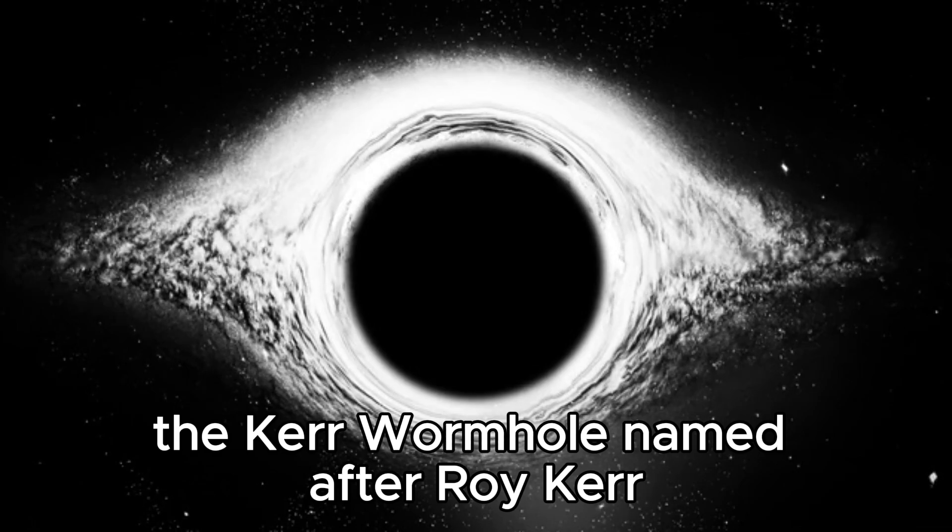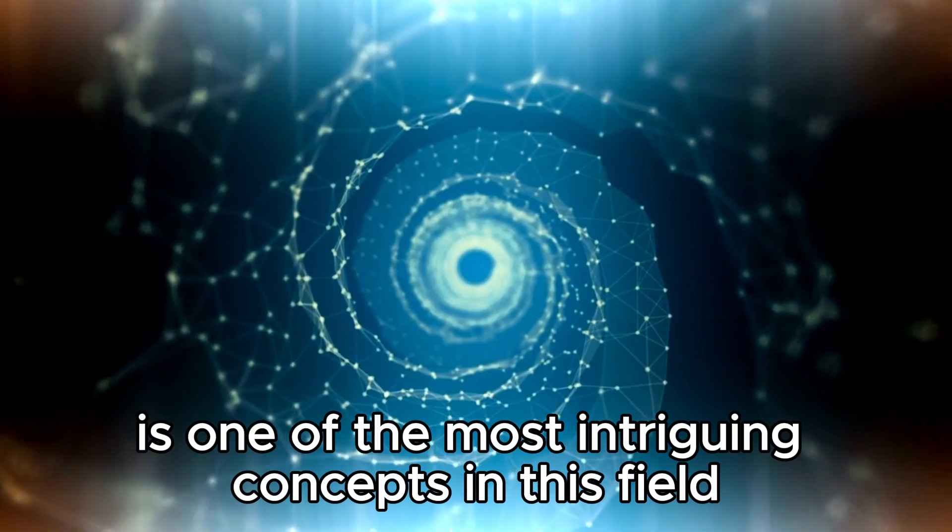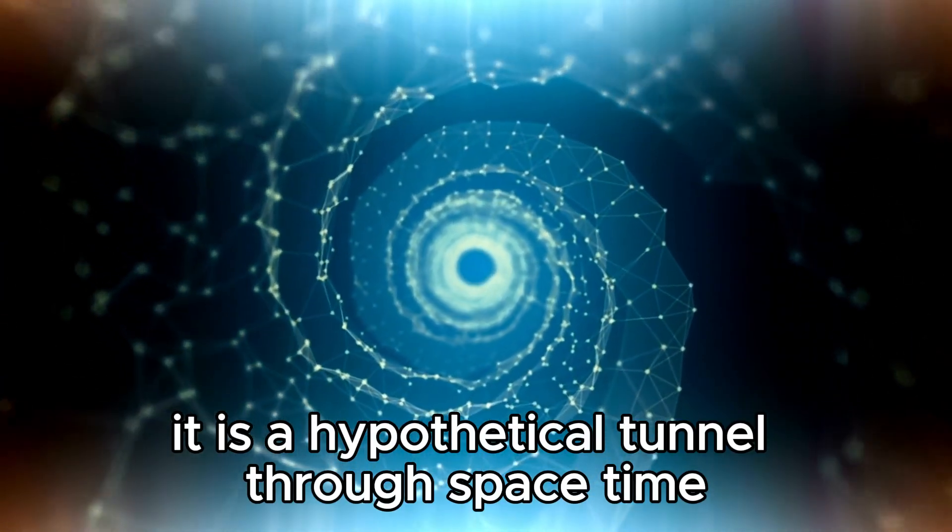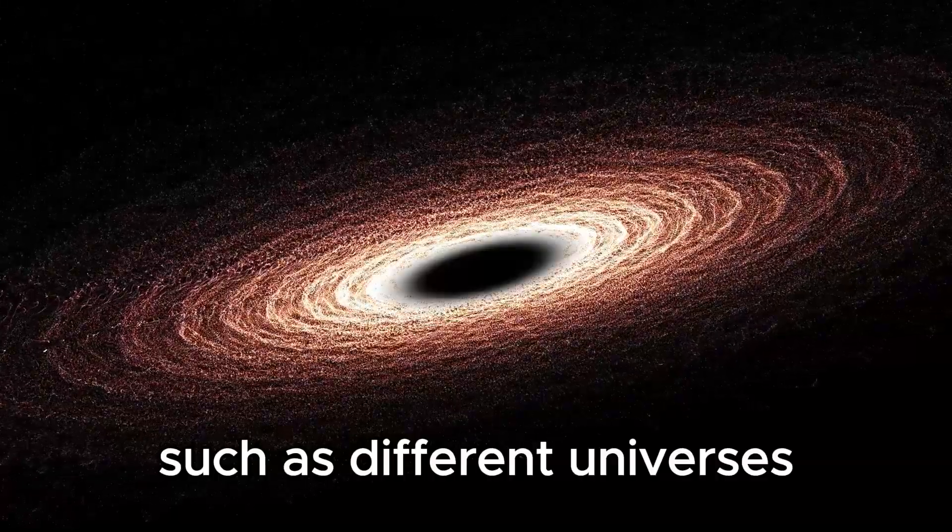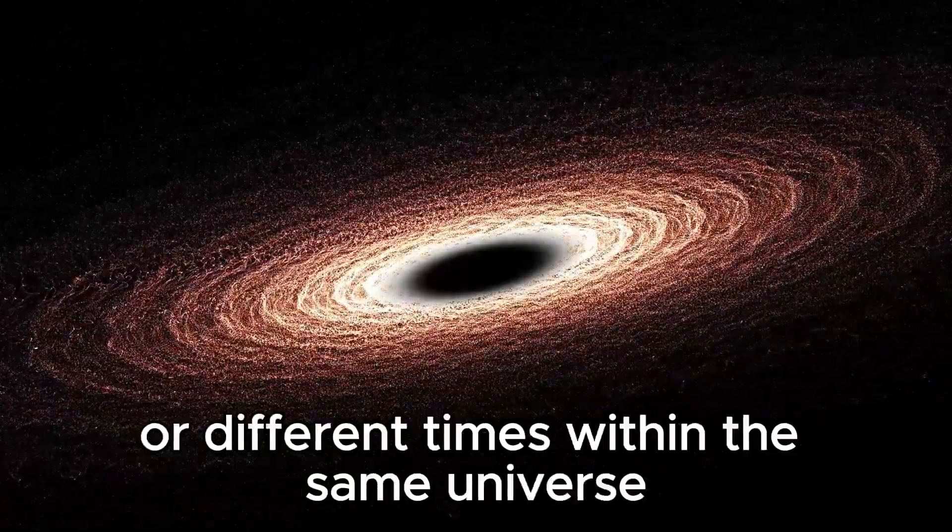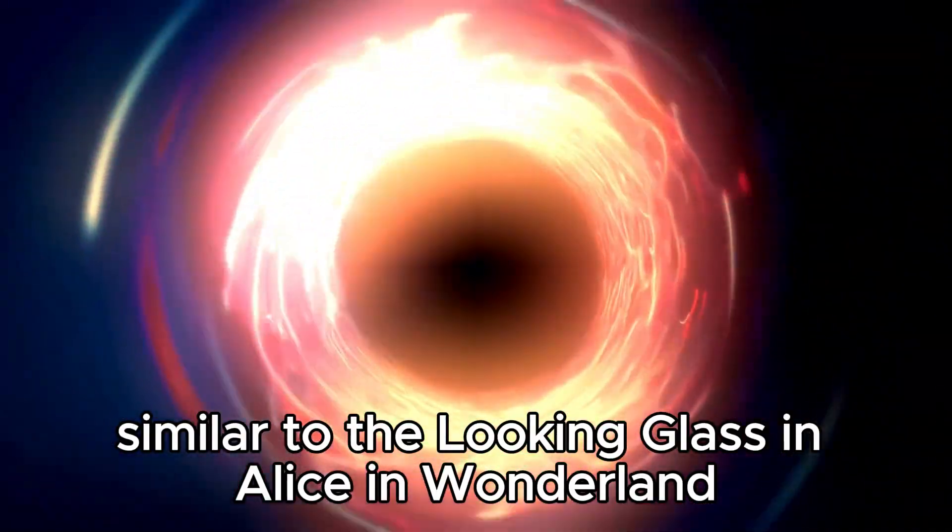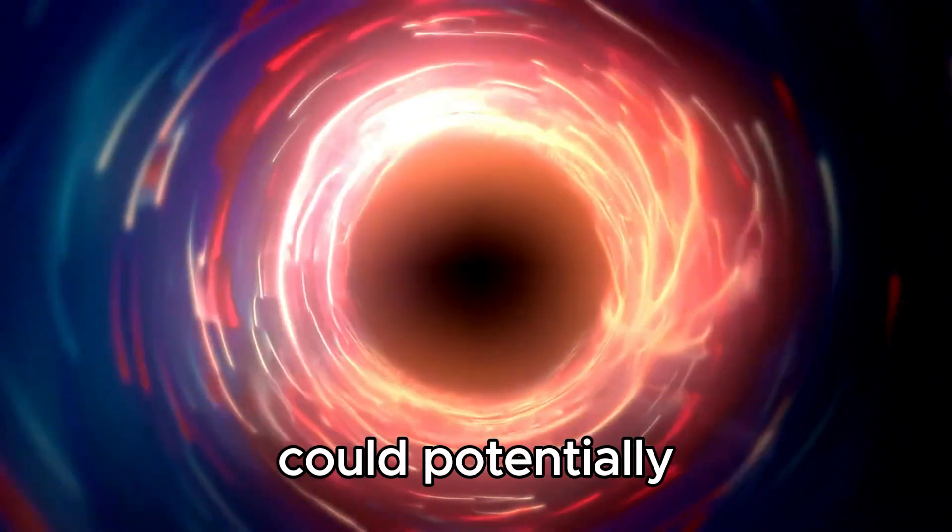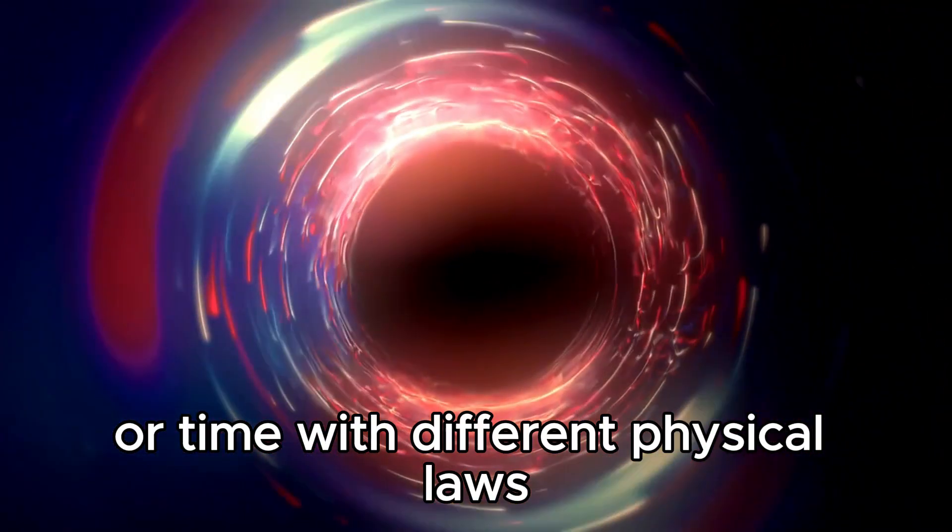The Kerr wormhole, named after Roy Kerr, is one of the most intriguing concepts in this field. It is a hypothetical tunnel through space-time that could connect two distant points, such as different universes or different times within the same universe. The Kerr wormhole is ring-shaped, similar to the looking glass in Alice in Wonderland, where passing through it could potentially transport a traveler to another universe or time with different physical laws.